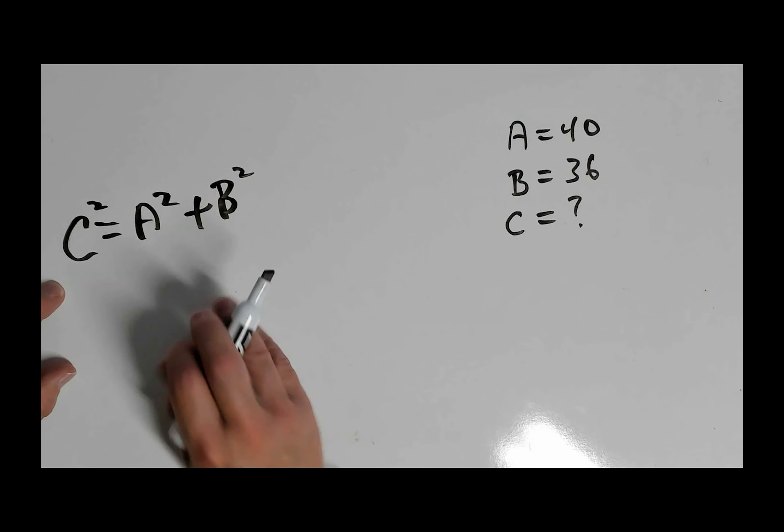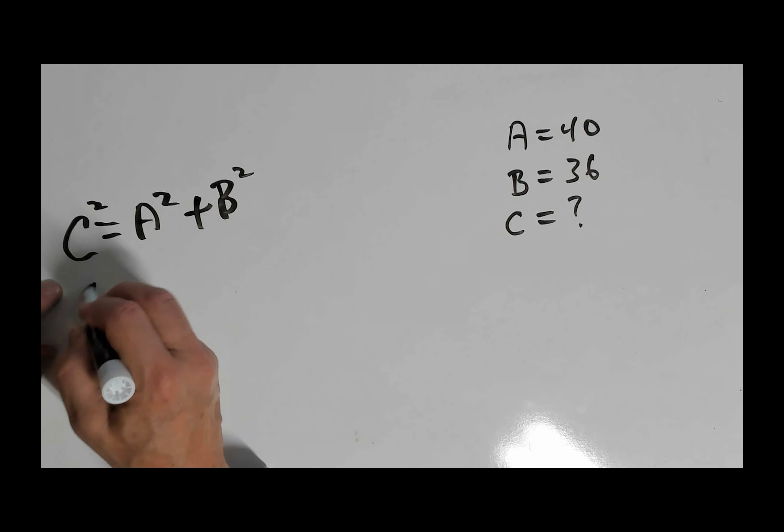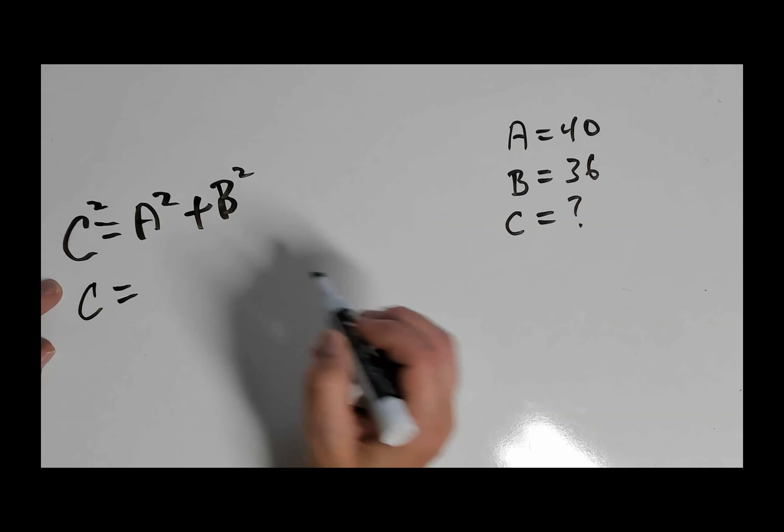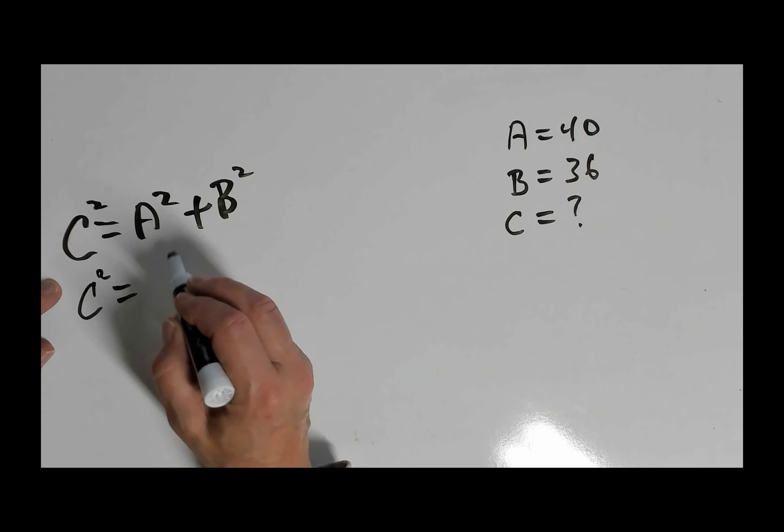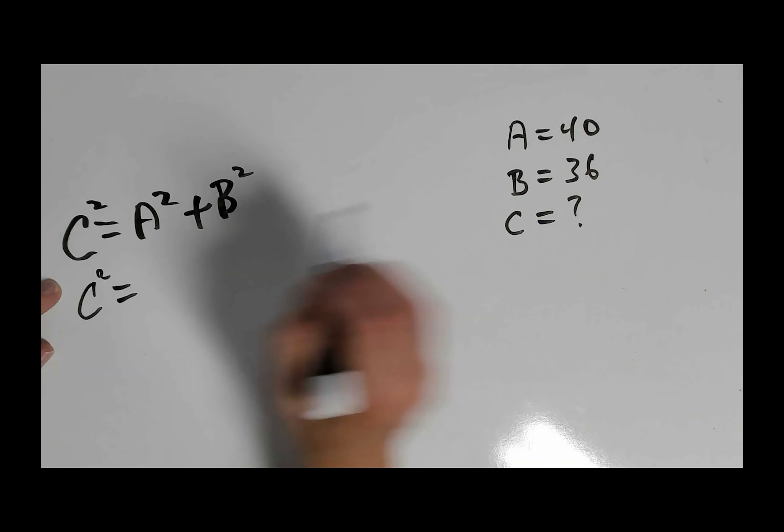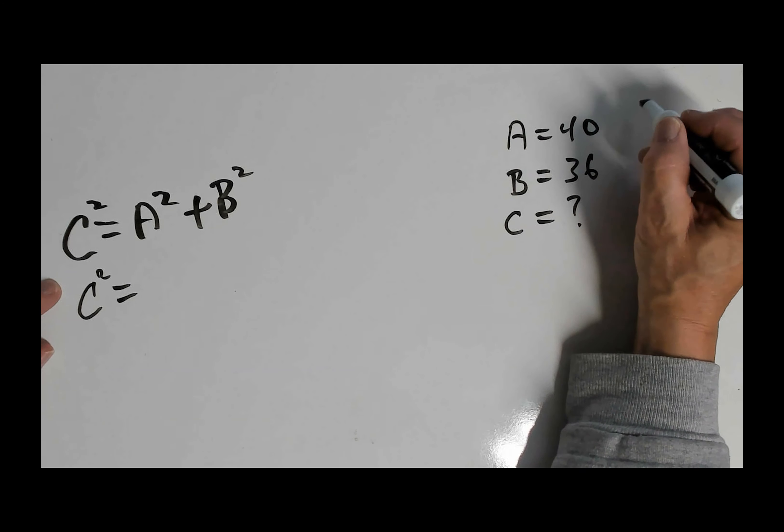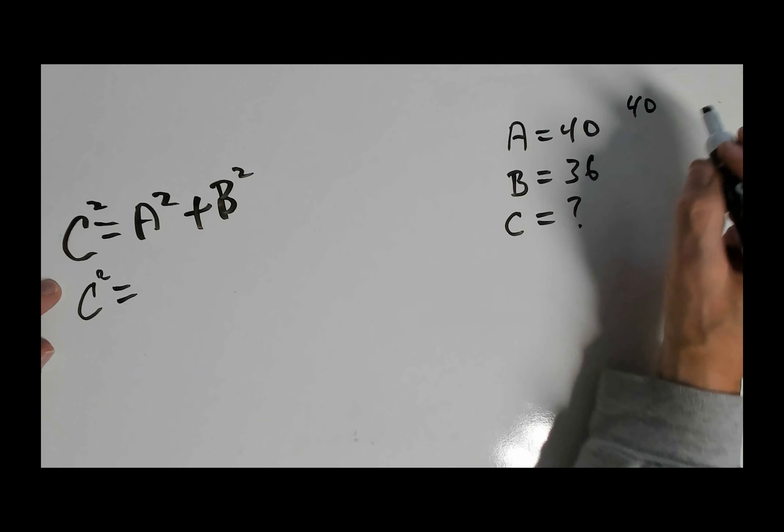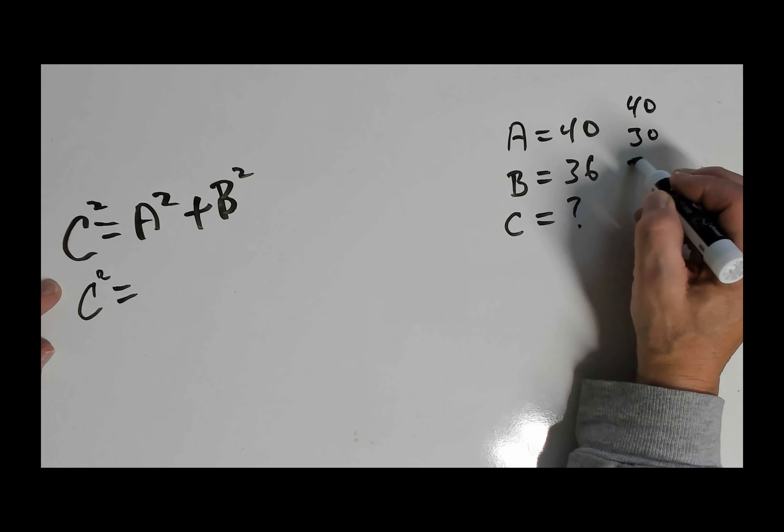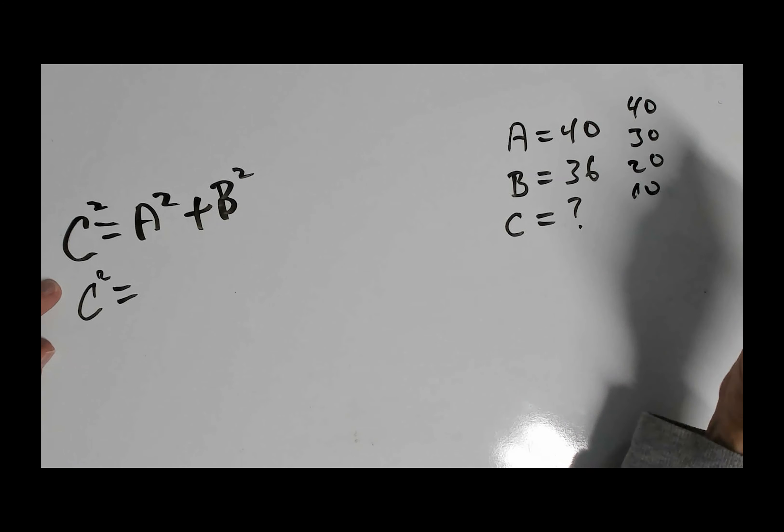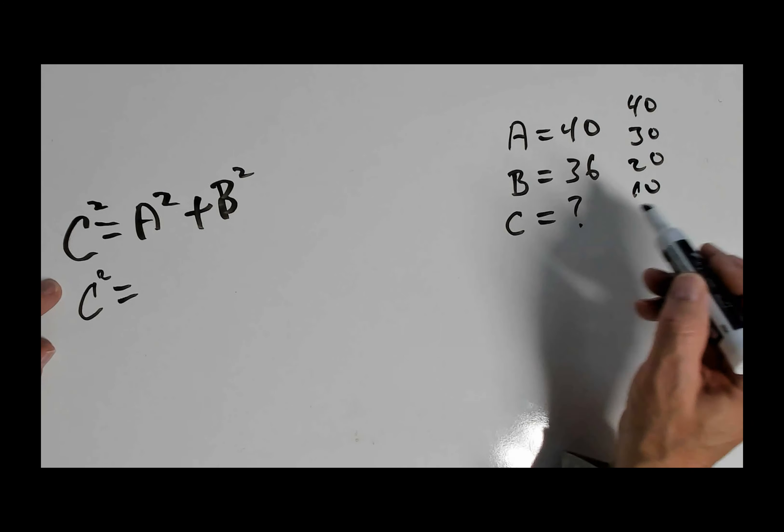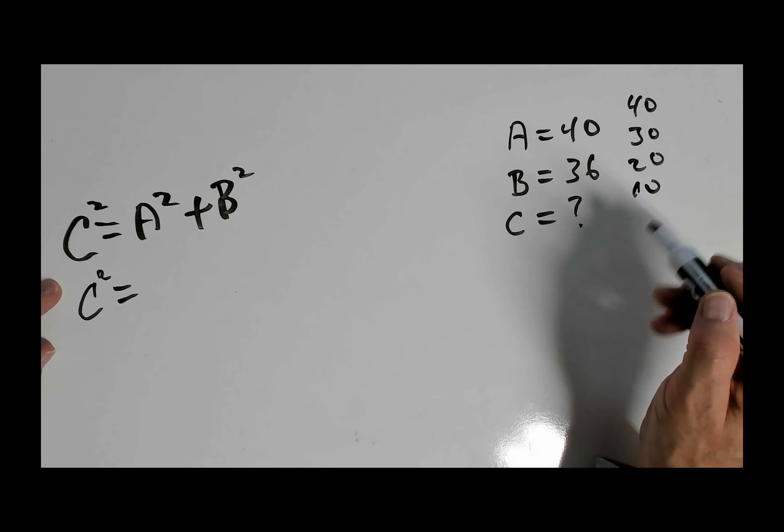C is an unknown, so we'll leave that as C squared. A squared is going to be 40. In this case, 40. Don't forget we have guy wires at 40 foot, 30 foot, 20 foot, and 10 foot. So you'd have to run this calculation for each set of guy wires.